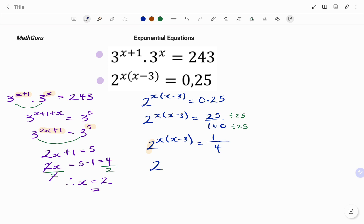So therefore, I have 2 to the power of x, bracket, x minus 3, equals 1 over 2 to the power of 2. Because 2 squared will give me 4.